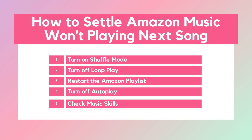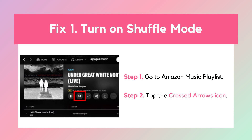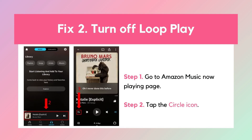If Amazon Music won't play the next song, here are some quick fixes. Fix 1: Turn on Shuffle Mode — go to Settings and toggle on Shuffle Mode to get the app playing smoothly. Fix 2: Disable Loop Play. If Loop is on, Amazon Music may stop after each song — turn off Loop to play songs in order.